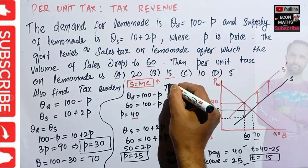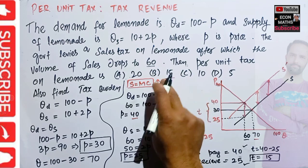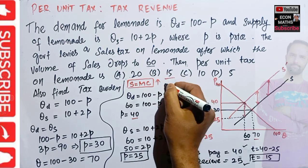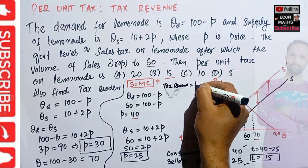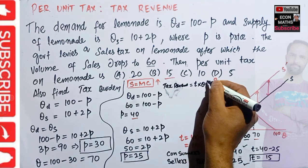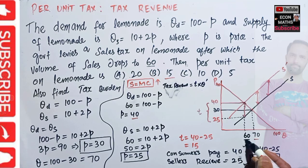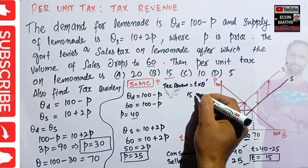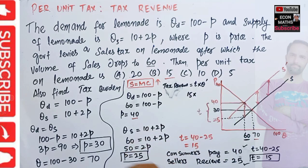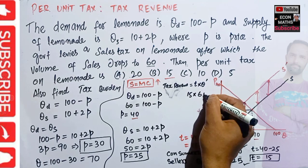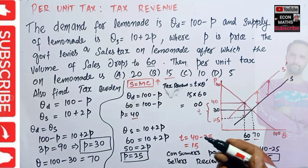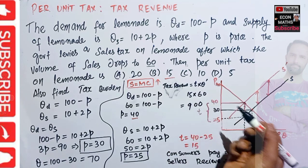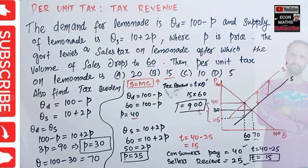We can also find the tax revenue. Tax revenue is simply the tax rate times the new quantity transacted. The new quantity transacted is 60 and the tax rate is 15, so tax revenue equals 15 times 60, which gives us 900. The tax burden — or tax revenue — is 900 dollars. I hope I made myself clear in this video. Thank you.